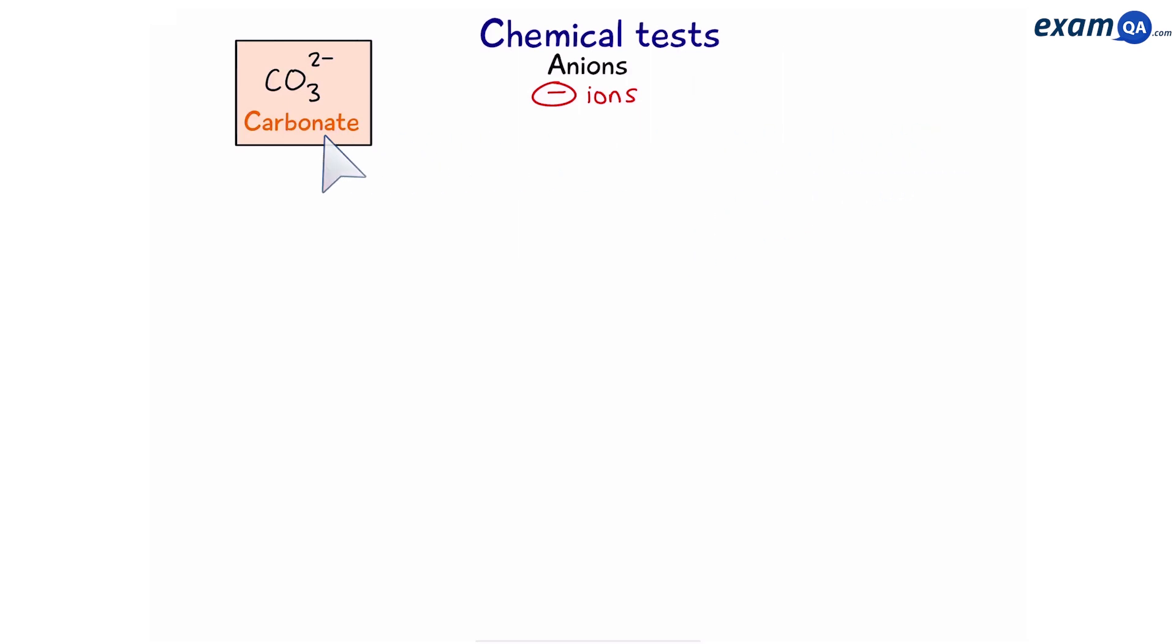Let's start with carbonate. Now we know that if a carbonate reacts with an acid it produces carbon dioxide amongst other products and carbon dioxide reacts with lime water.